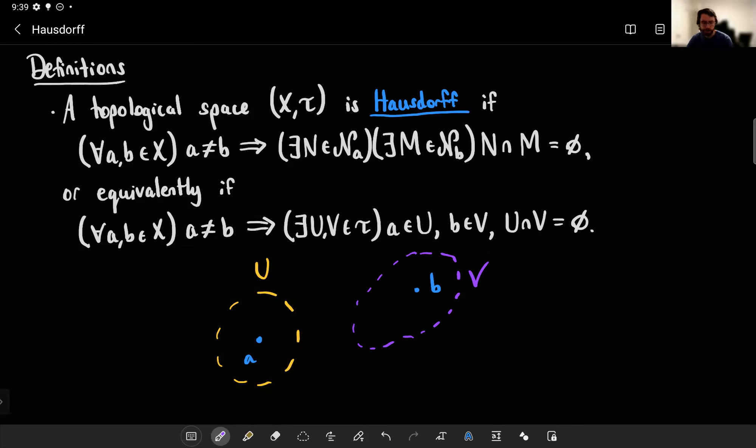In particular, you can always take the distance between two points A and B, split it in half, and then there you go. Put open balls of that kind of half radius around each point, and they'll be disjoint.